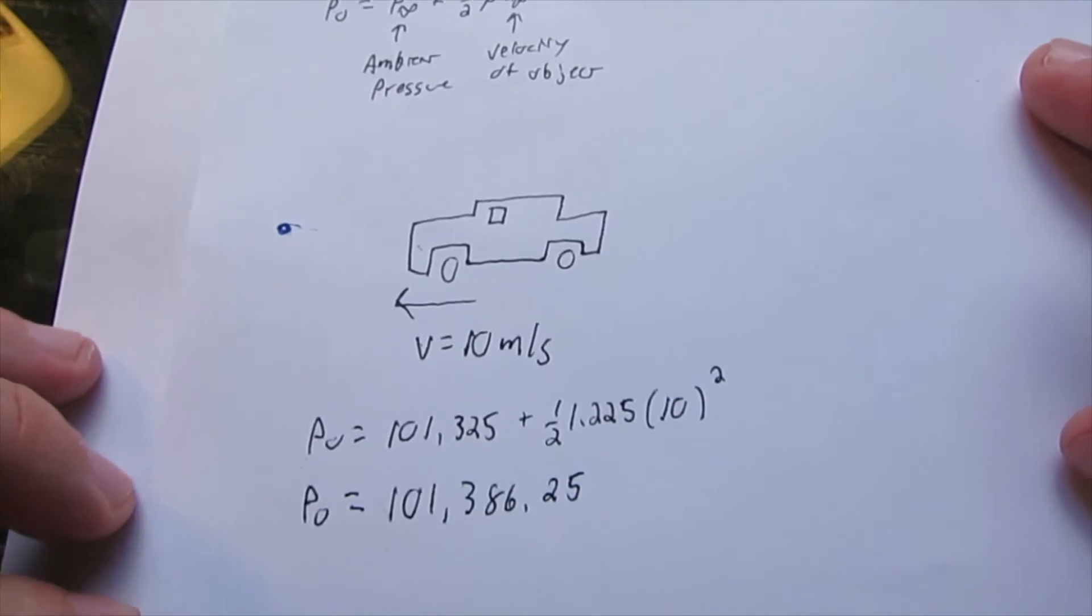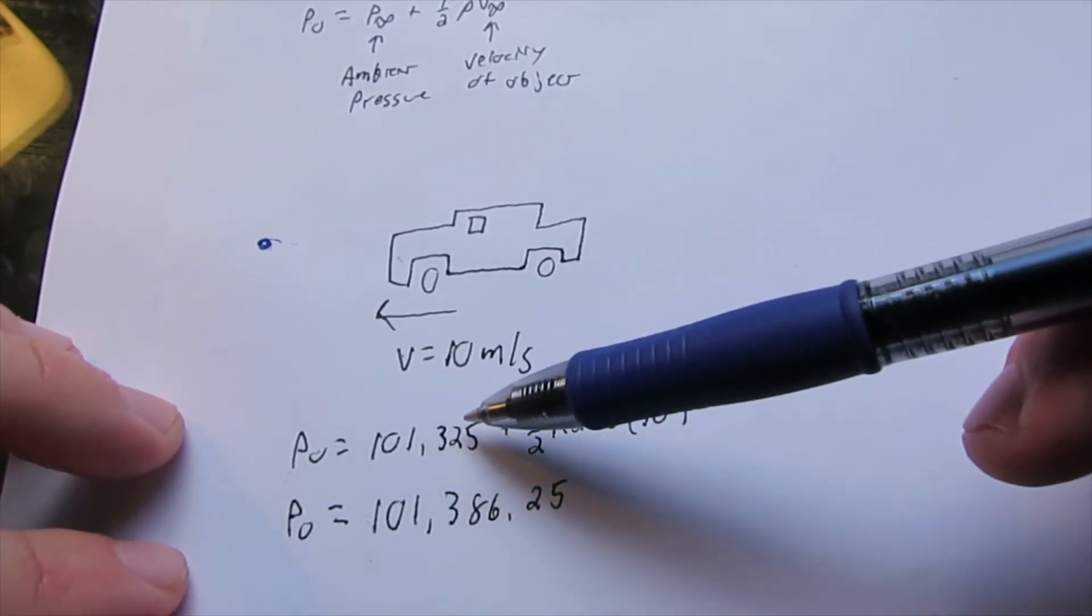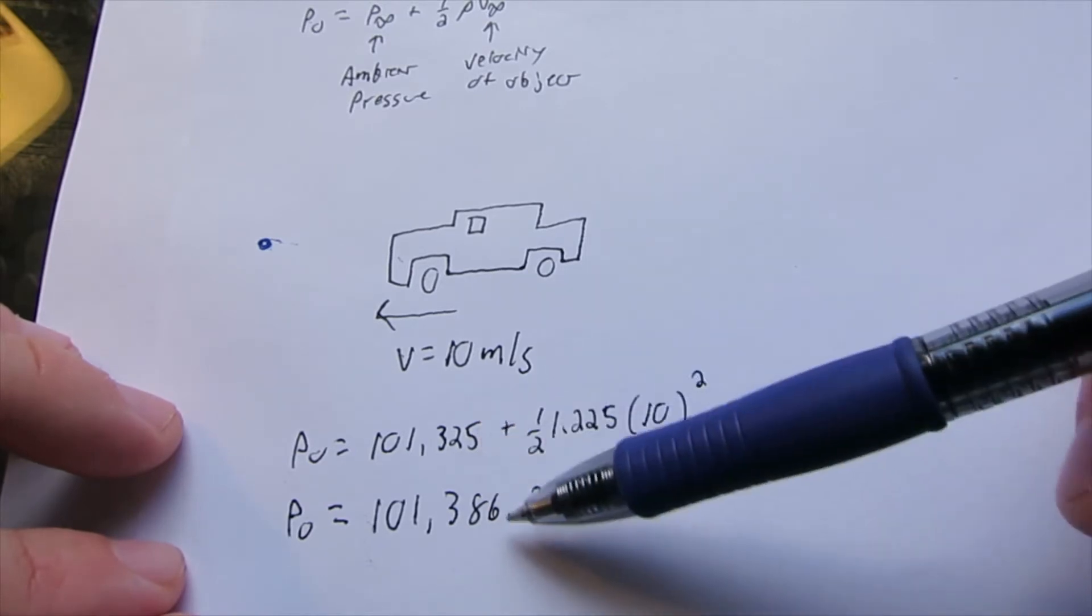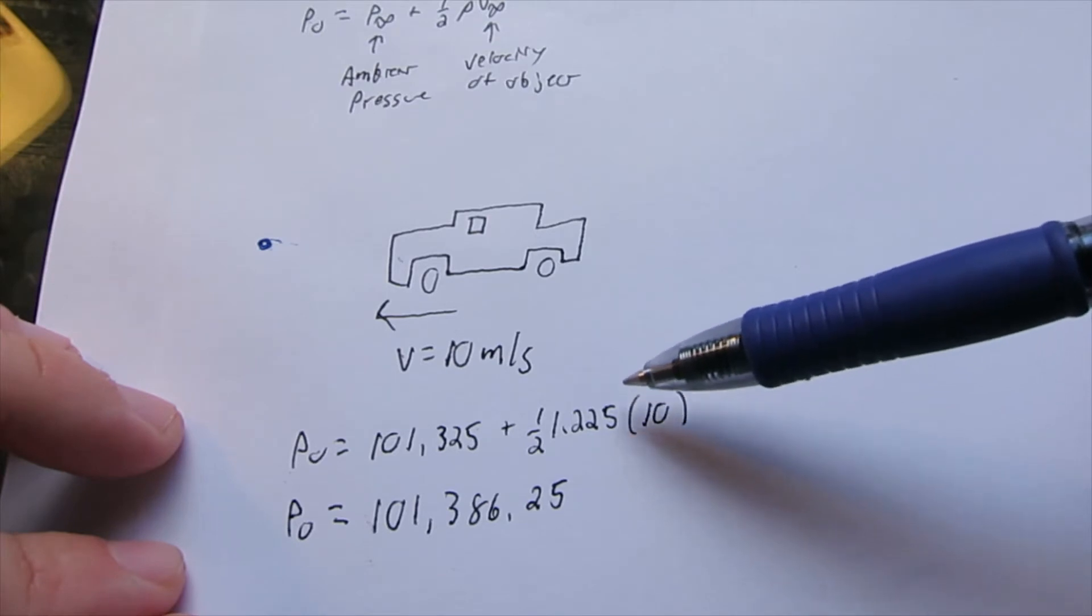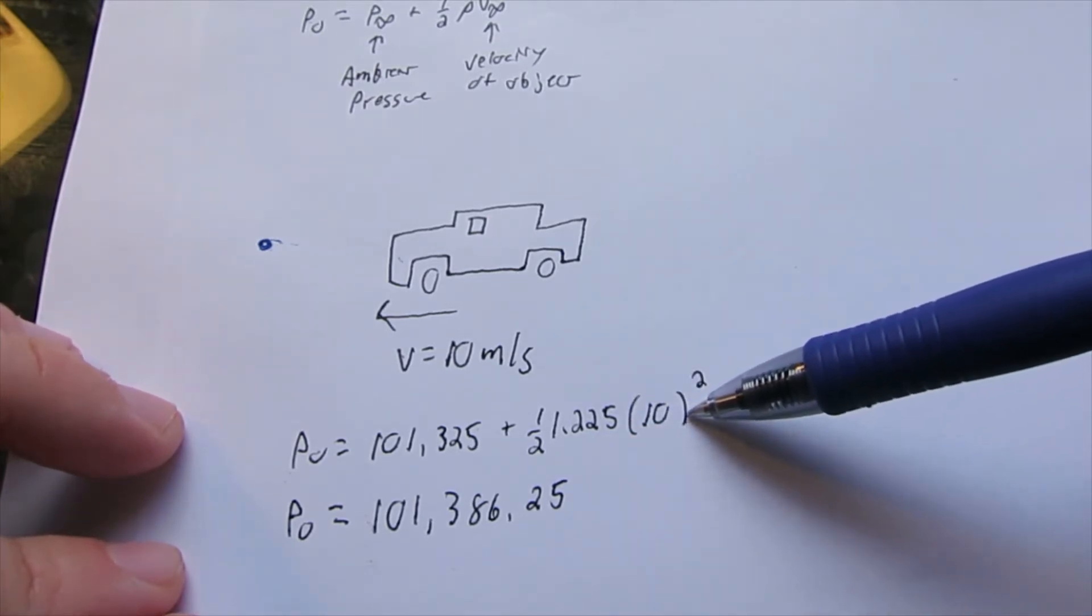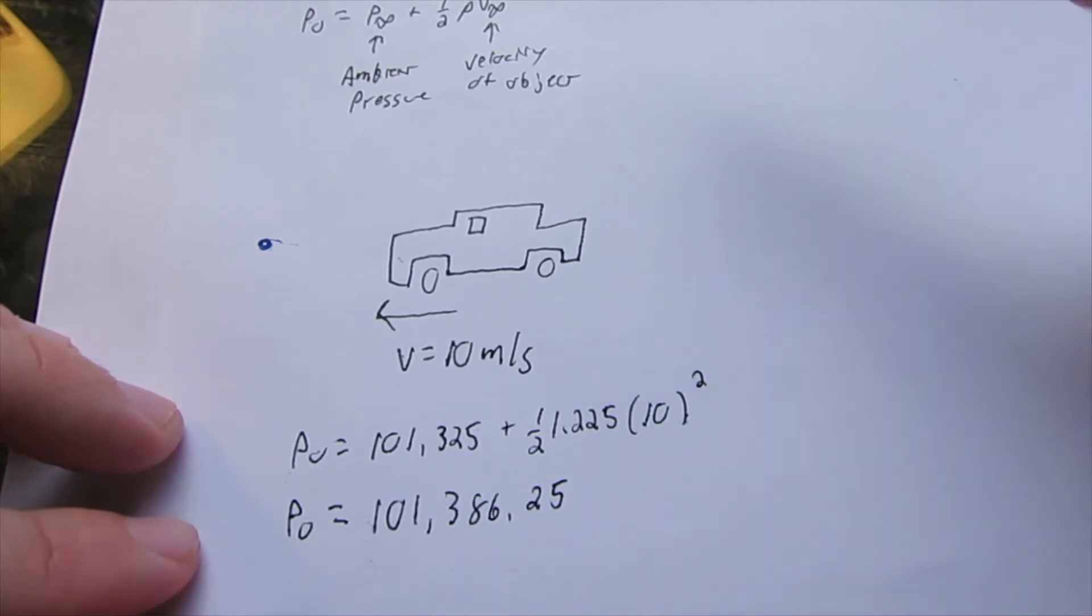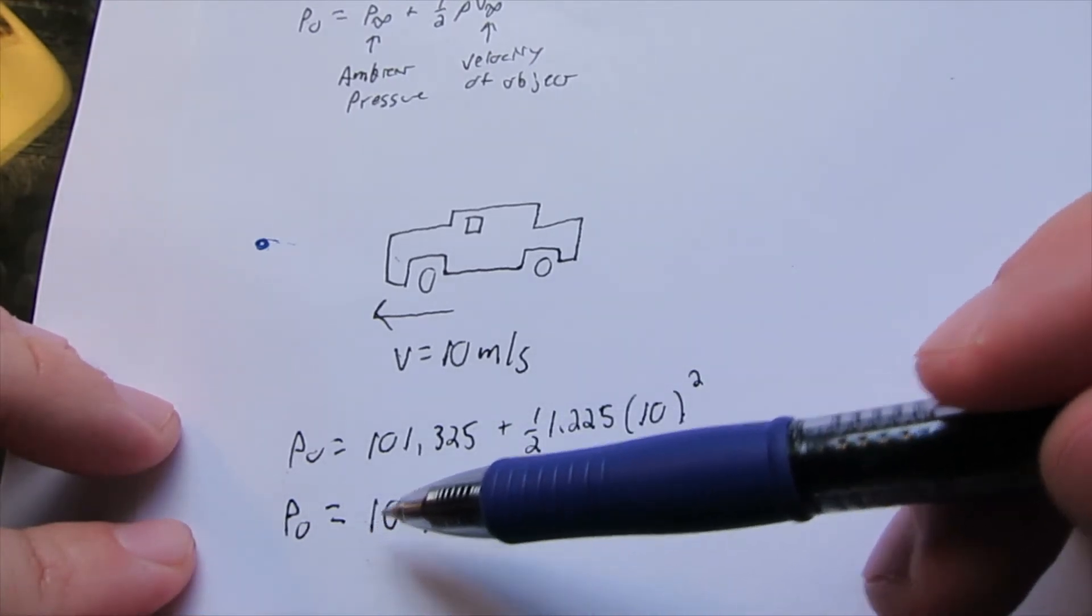Back to our example problem. P₀ = 101,325 (our ambient air pressure) + ½ times 1.225 kg/m³ (the density of air) times our velocity of 10 m/s squared. We get our stagnation pressure from this calculation.